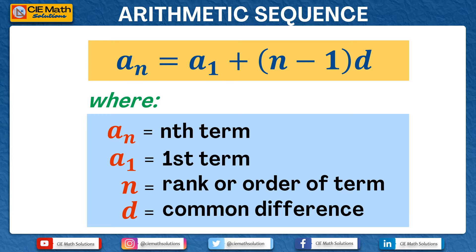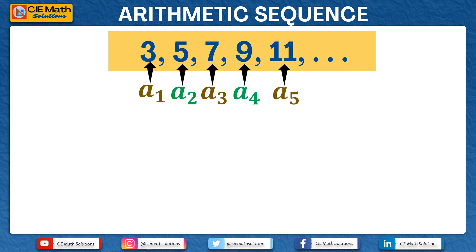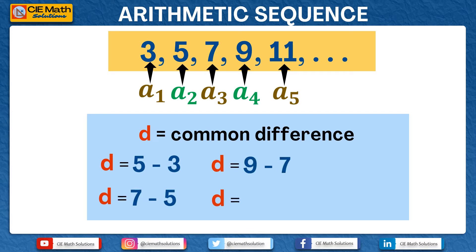Let us explore the derivation of this formula for the nth term of an arithmetic progression using an example. Let us consider the sequence containing 3, 5, 7, 9, and 11. Here, a1 is 3, a2 is 5, a3 is 7, a4 is 9, and a5 is 11. To find the common difference, we subtract any consecutive terms: 5 minus 3, 7 minus 5, 9 minus 7, or 11 minus 9. Any of these gives us the common difference, which is equal to 2.